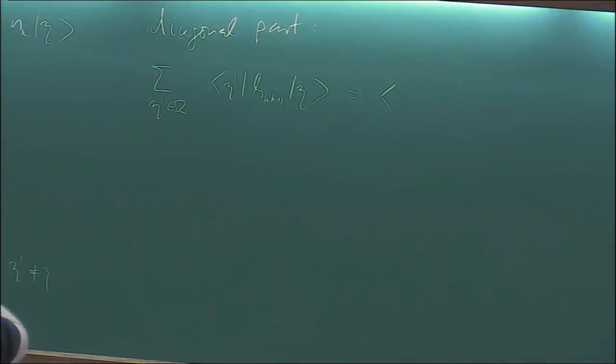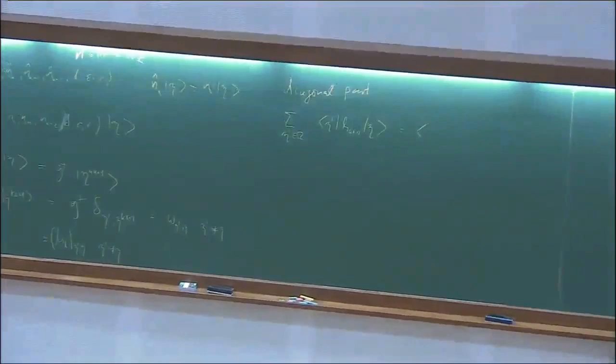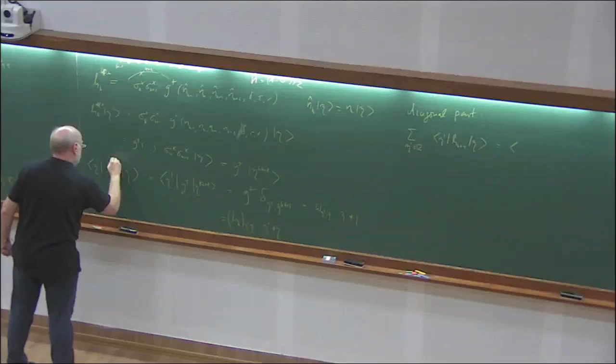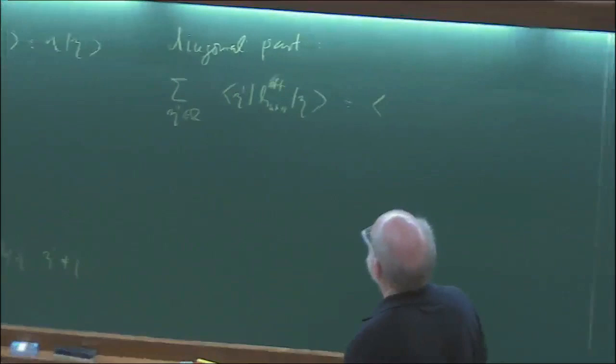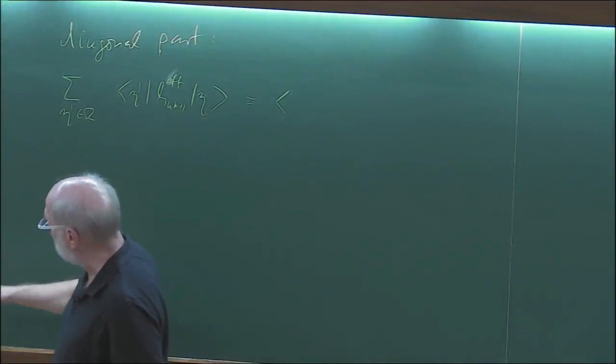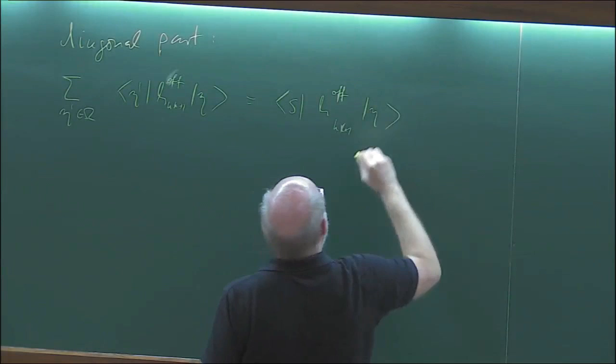The diagonal part is the sum over all eta' in the state space of eta' H_K^{off} eta. The sum of eta' gives the summation vector S. We just apply H_K^{off} to the left on S. Since sigma_X acting on S leaves S invariant—S is an eigenvector of sigma_X—we get S times G(N_{K-1}, N_K, N_{K+1}, N_{K+2}; delta, epsilon, R) times eta.